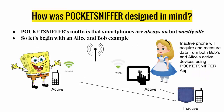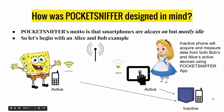So how was Pocket Sniffer designed? Pocket Sniffer's motto is that smartphones are always on but mostly idle. Let's look at an Alice and Bob example. Here we have SpongeBob and Alice in Wonderland. They both have wireless devices that connect to the same AP. SpongeBob has a smartphone while Alice has both a tablet and a smartphone. Alice keeps her smartphone in her pocket — it's an inactive device because she's not going to be using it. They're both sitting at a cafe with Pocket Sniffer installed on their devices.